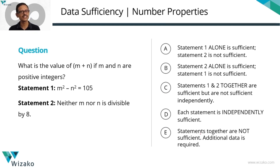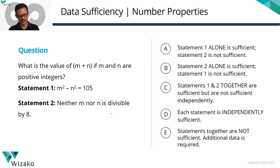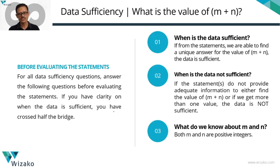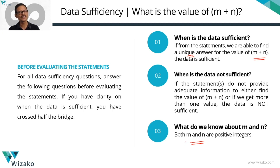Let's get started. Both these questions basically tell us good ways to look at whether we can list down things or look at counter examples. Some cases we can meaningfully list down; some cases looking for a counter example is probably the only way. This question is a listing-down case. What is the value of m plus n if m and n are positive integers? This is a 'what is' question — the data is sufficient only if we get a unique answer for m plus n. If we get more than one value or no value, the data is not sufficient. Crucially, both m and n are positive integers.